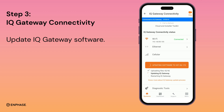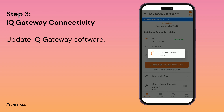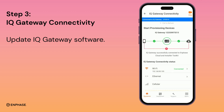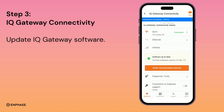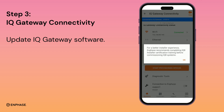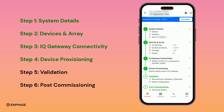After the update, the IQ Gateway will restart and reconnect with the mobile device. Your IQ Gateway is now updated to the latest software available. Click on Start Provisioning Devices. After device provisioning, complete steps 5 and 6 to commission the plant.